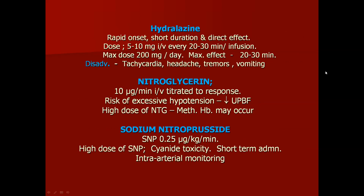Hydralazine is also used — it has rapid onset and short duration with a direct effect. Disadvantages include tachycardia, headache, tremors, and vomiting. Dose: 5 to 10 mg IV every 20 to 30 minutes. Direct vasodilators like nitroglycerin and sodium nitroprusside can also be used, but there is a risk of excessive hypotension and decreased uterine blood flow. High doses of nitroglycerin carry a risk of methemoglobinemia, and sodium nitroprusside carries a risk of cyanide toxicity, so it is used only for short-term administration. Both require intra-arterial monitoring.